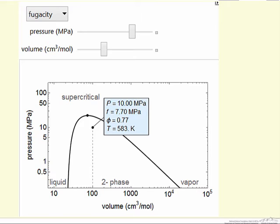We're plotting pressure on a log scale, volume on a log scale, and this point can be moved around by changing the pressure or changing the volume with a slider. The pressure is then read off and the fugacity is calculated.